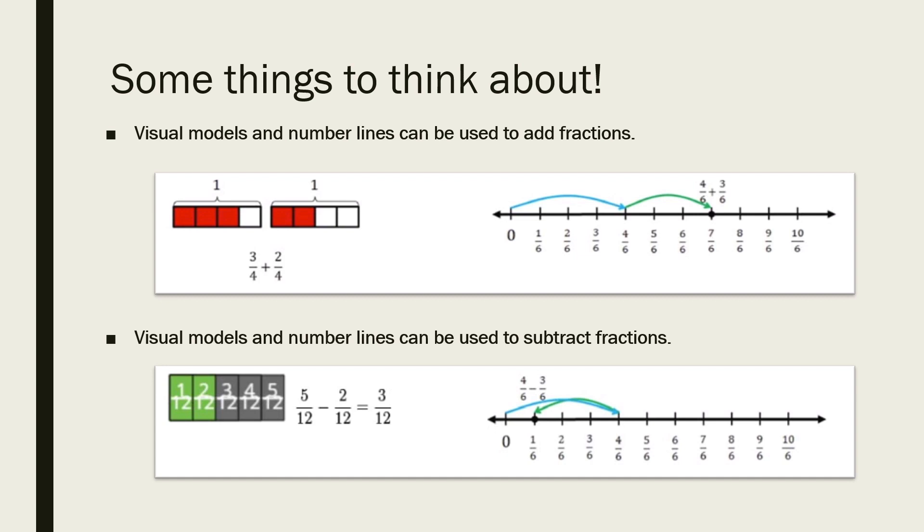When using models to subtract, we start with our first number, which is in this example, five twelfths. We don't have to draw another two twelfths because we're not combining it. But in fact, we are going to go ahead and shade in the two twelfths that we are subtracting.